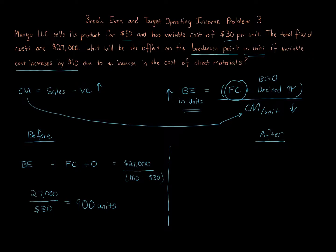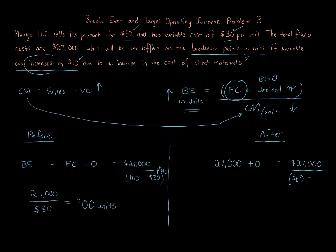For the after picture with variable costs increasing by $10, the calculation is nearly the same — variable costs just go up by $10. Fixed costs stay at $27,000. The selling price remains $60, but variable costs are now $30 plus $10, which is $40. So the contribution margin is $60 minus $40 equals $20. That gives us $27,000 over $20, and the break-even is 1,350 units.